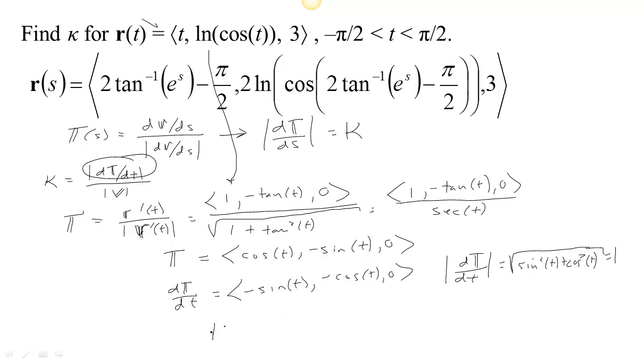So we can get kappa because kappa is going to be the length of d unit tangent d time, which is 1, all over the speed. And we've already calculated the speed to be secant right here, so we get 1 over the secant.